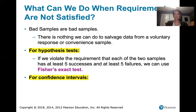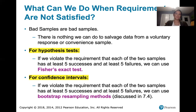Now, if you want to construct a confidence interval for the difference between two population proportions — so you're trying to estimate the difference between p-one and p-two for two populations — then we can use what are called bootstrap resampling methods. Those are discussed in Section 7.4 of our book if that last requirement is not met. So we actually can come up with a confidence interval in that case, but we'll have to make some modifications. We're not going to cover that in this class, but if you're interested you can look it up in Section 7.4.